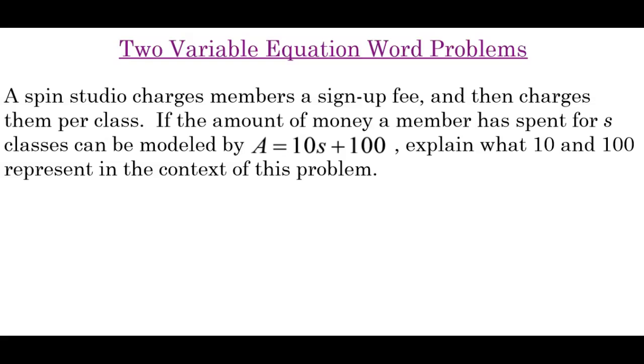A spin studio charges members a sign-up fee and then charges them per class. If the amount of money a member has spent for s classes can be modeled by A = 10s + 100, explain what 10 and 100 represent in the context of this problem.